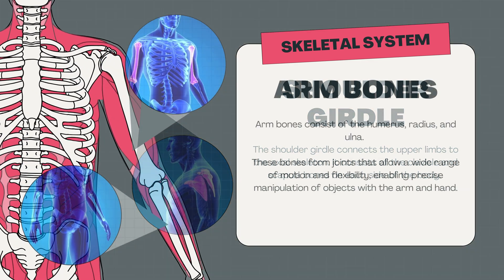The vertebral column has 33 vertebrae: 7 cervical (C1 to C7), 12 thoracic (T1 to T12), 5 lumbar (L1 to L5), 5 sacral, and 4 coccygeal. The 5 sacral vertebrae are fused to form the sacrum, and the 4 coccygeal vertebrae are fused to form the coccyx.